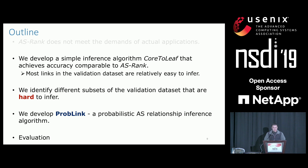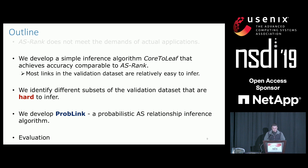Here's the outline of this talk. We have already explained that the state-of-the-art ASRank algorithm does not meet the demands of actual applications, with route leak detection as an example. We next develop a very simple algorithm called call-to-leaf, which can achieve accuracy comparable to ASRank. This implies that most links in the validation dataset are actually very easy to infer.